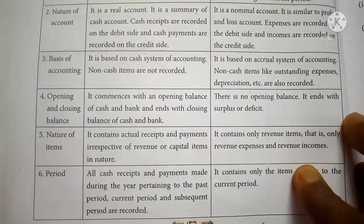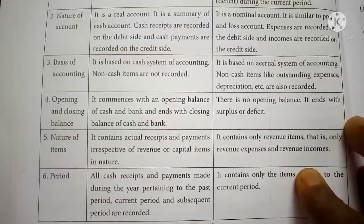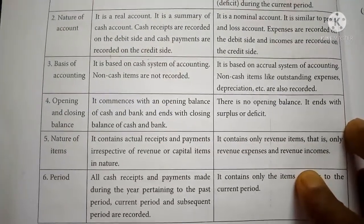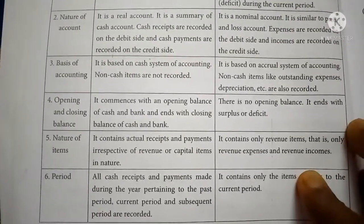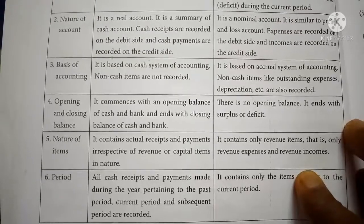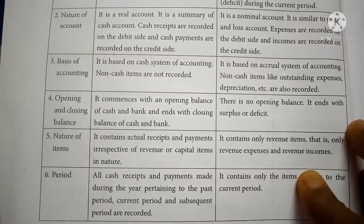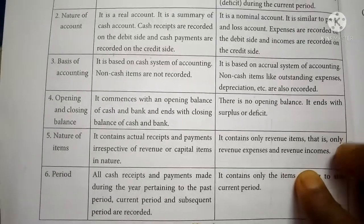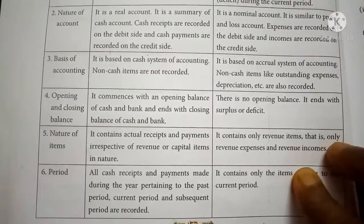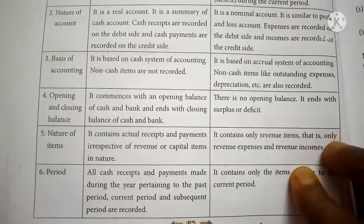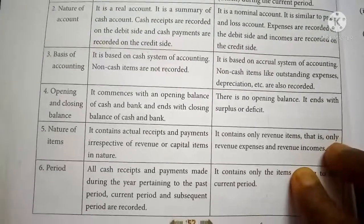Nature of items: The Receipts and Payments account contains actual receipts and payments irrespective of whether they are revenue or capital in nature — all receipts and payments must be recorded. In the Income and Expenditure account, only revenue items — revenue income and revenue expenses — should be recorded.